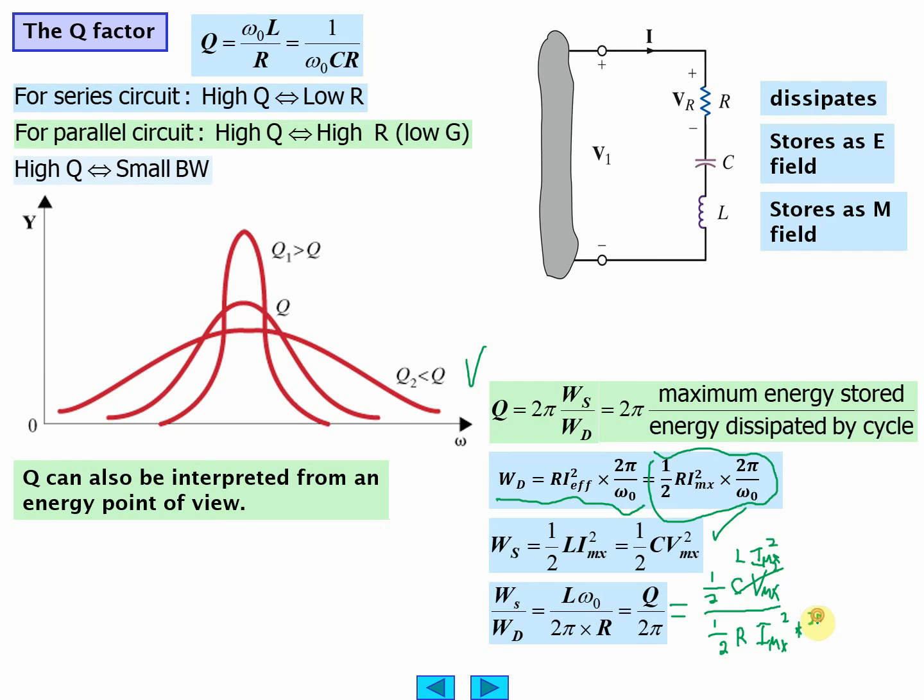Well, the I max cancel out, so you're going to get L over I, and the one half cancel out, so you're going to get L over R times omega not over 2 pi, which L over R omega not is Q.